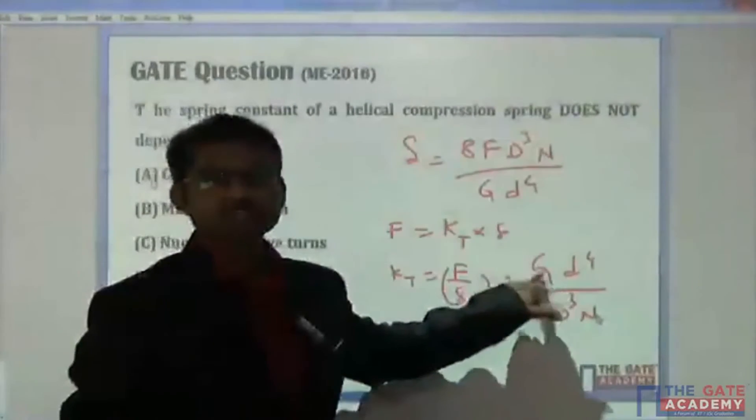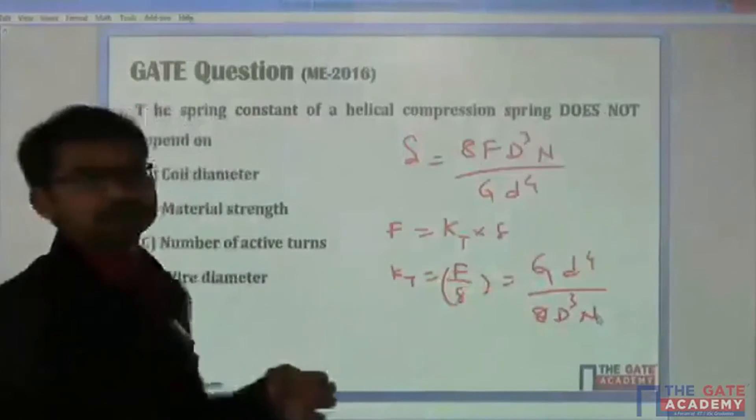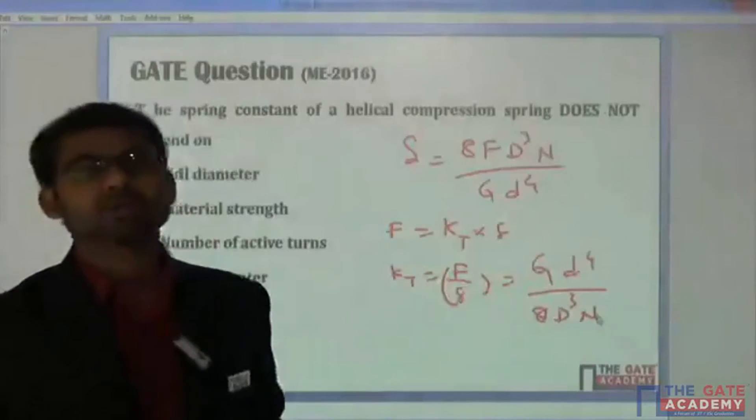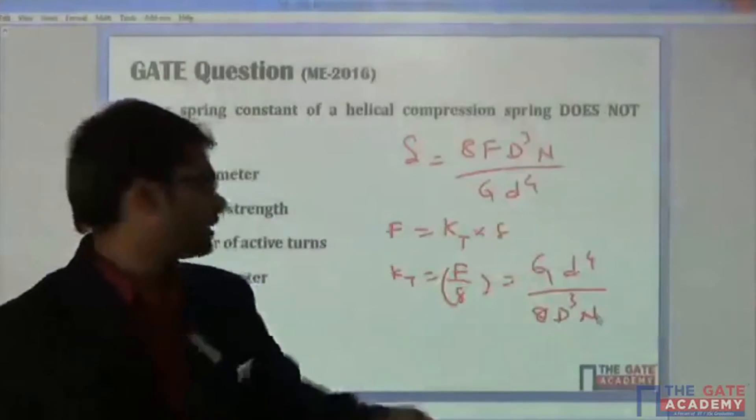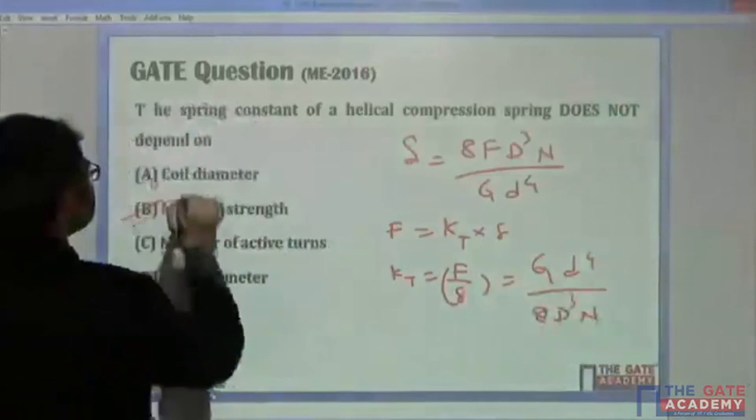But G is the material property. It is not the material strength - generally you get confused with this. Material strength means the maximum stress the material can take up to failure. It is a stress value, but here there is no component of stress value. That means the answer is B.